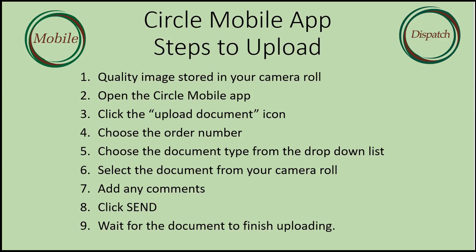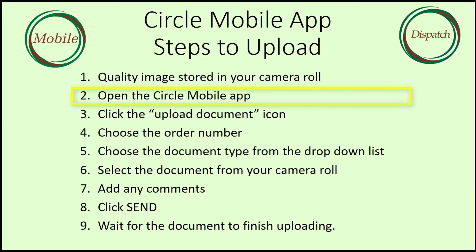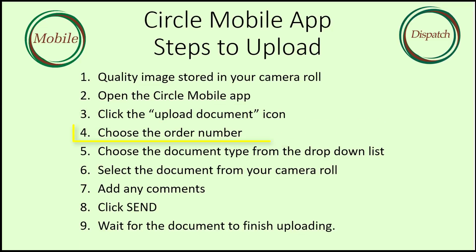To recap, the steps to submit images are as follows. First, get a good quality image of the document you want to send and store it in your camera roll. Second, open the Circle Mobile app. Third, click on the upload document icon. Fourth, if you are in a manifest with more than one order, choose the order number.